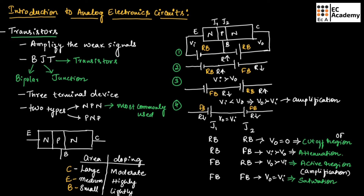In the cutoff region the transistor is off, and in the saturation region the transistor is on — meaning the transistor is acting as a switch, for which we can use a simple diode. Attenuation is also not used because the transistor is meant to amplify weak signals. That is why we use the third condition: Junction J1 forward biased and Junction J2 reverse biased.